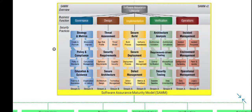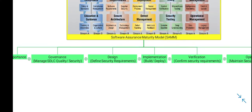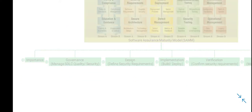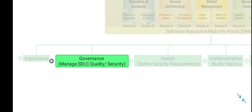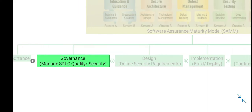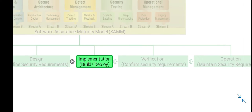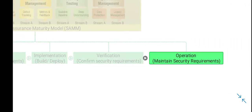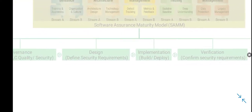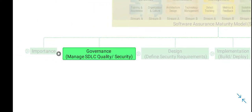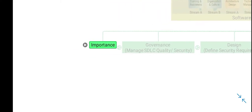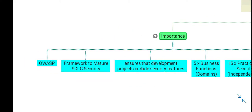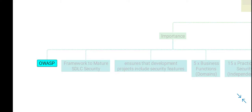In this video I will discuss the Software Assurance Maturity Model, starting with its importance and then certain domains or business functions of this model: Governance, Design, Implementation, Verification, and Operations, and then certain security practices within each of these business functions.